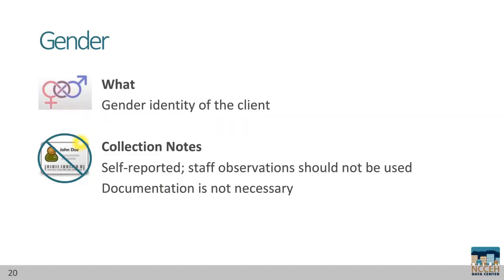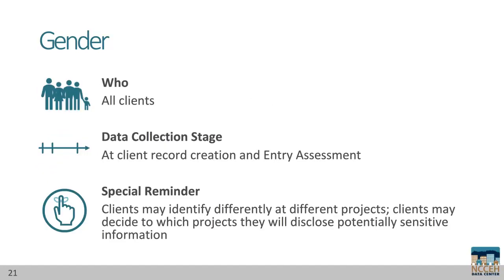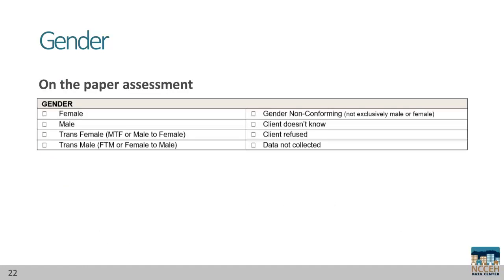Gender refers to the gender identity of a client. HUD suggests one way to ask this is: which of these genders best describes how you identify? This element should be strictly self-reported by the client, and staff observations are not appropriate. Documentation is also not necessary. All clients should be asked about gender identity, and this data is collected for record creation and project start assessment.